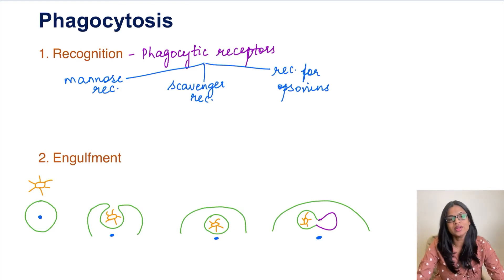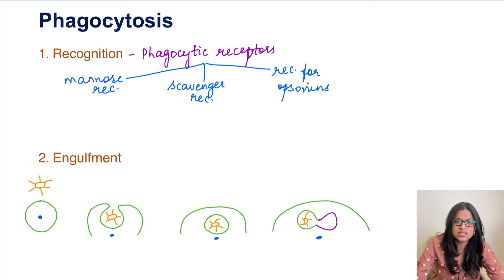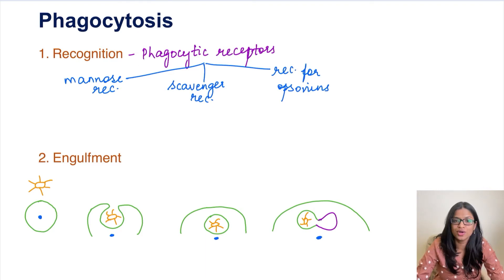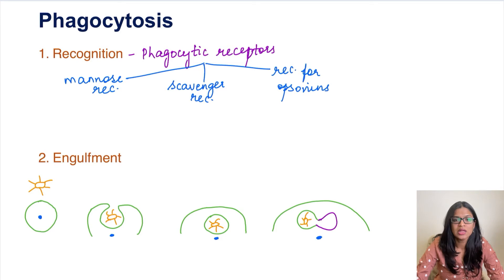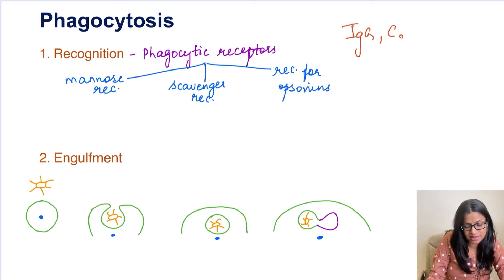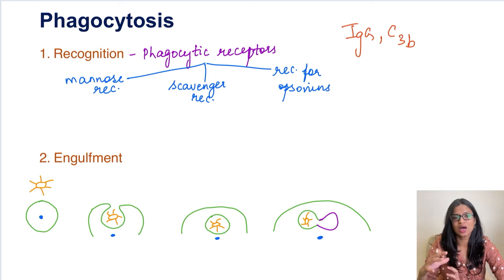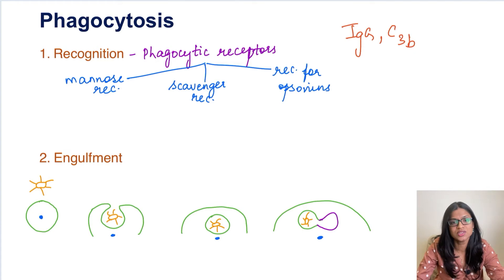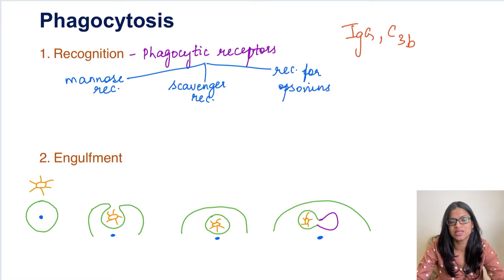The initial step is recognition — once the phagocyte reaches the site, it has to recognize the offending agent. This is done with the help of certain receptors: mannose receptors, which recognize mannose present on the cell wall of bacteria; scavenger receptors; and receptors for opsonins. Opsonins are substances like IgG and C3b that coat the offending agents, making them easily recognized by phagocytic cells. This coating process is called opsonization.